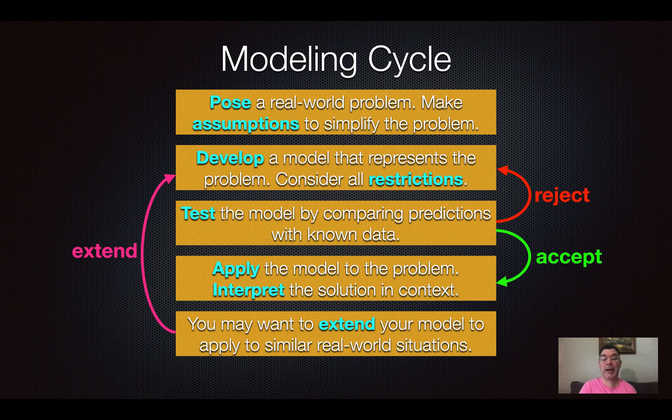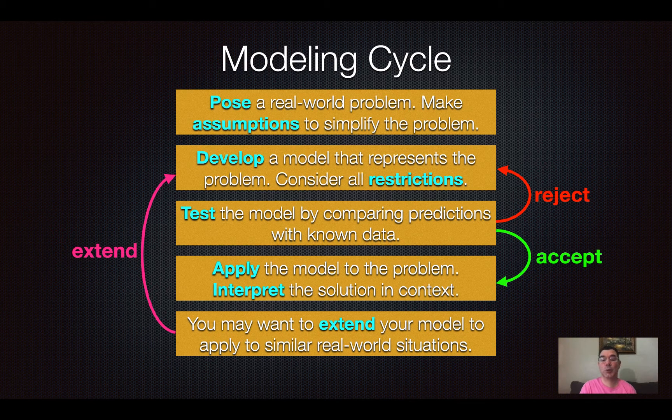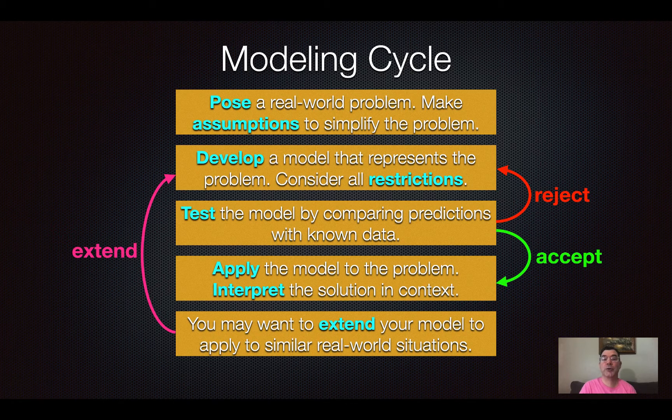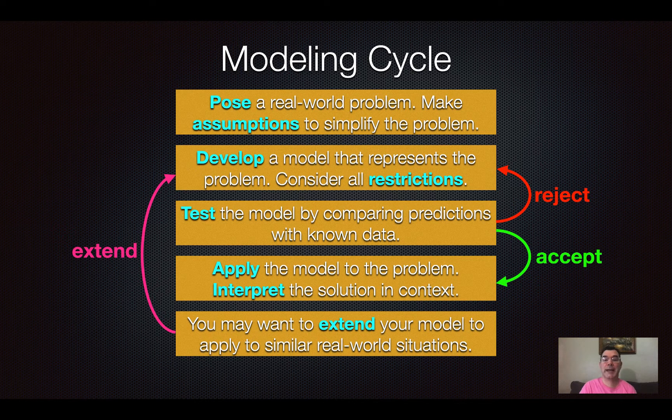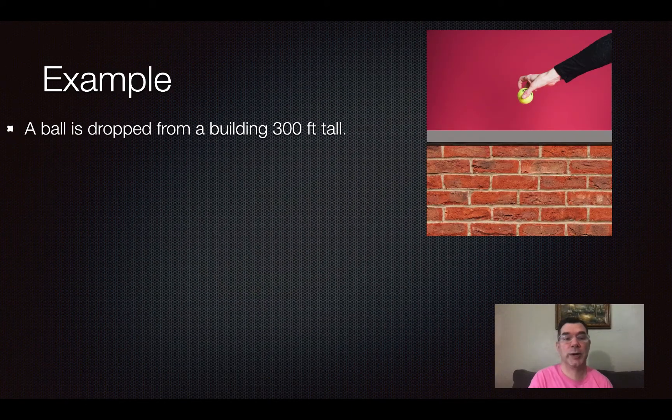And then if we do a good job at doing that, applying the model and interpreting the solution, we might actually want to extend our model to apply to similar real-world situations, which means we need to go back and not necessarily develop a new model, but play around with the parameters in our model to make it even better. So that's the cycle that we use to model real-world situations.